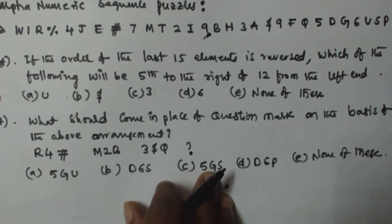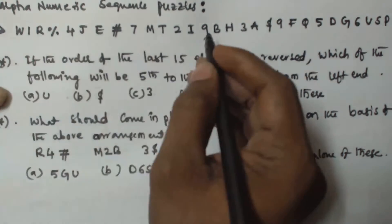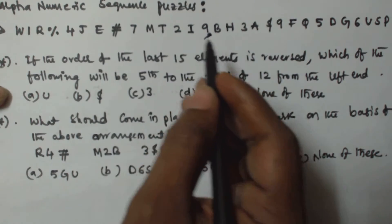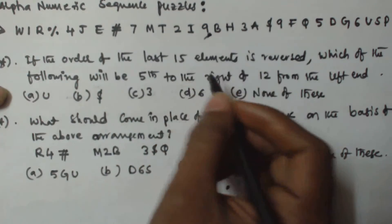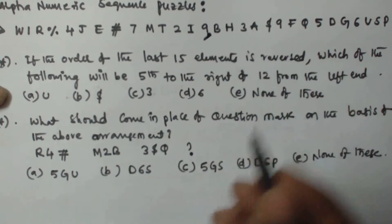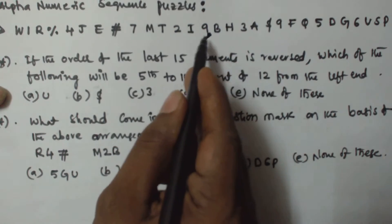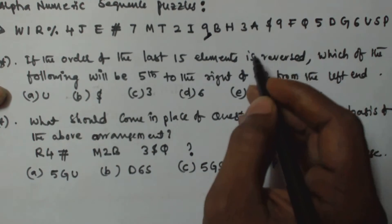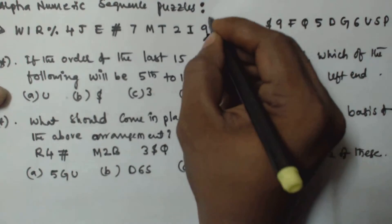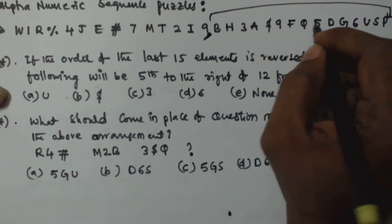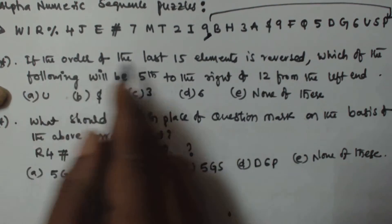Whenever you are counting, just mark elements around 12, 13, 14, or 15 since the number of elements in a given series is typically between 30 and 35. Here up to element 9 is the 14th position, and the remaining 15 are the last 15. Since the order of the last 15 is reversed, after 9 the sequence now starts from P, then S U 6 G D 5 Q F, ending with B.